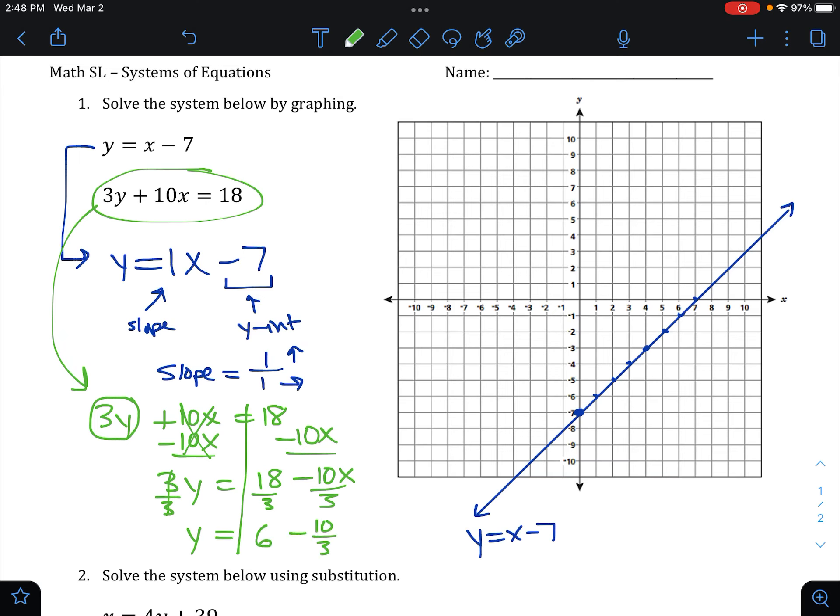That seems kind of nasty. Like, ooh, why would you want to leave it like that? Well, that's actually easier to graph because the 6 is going to be the y-intercept. And the negative 10 thirds will be our slope. And if it's negative, it's going to go down, and it's going to go right 3. So down 10, right 3, starting at our y-intercept of 6. That's how we're going to graph this.